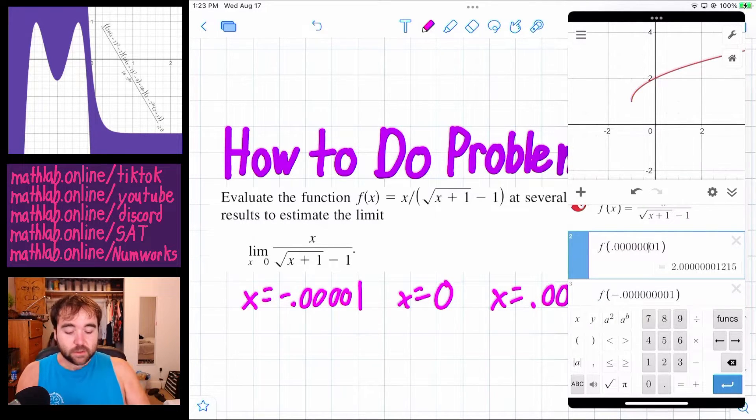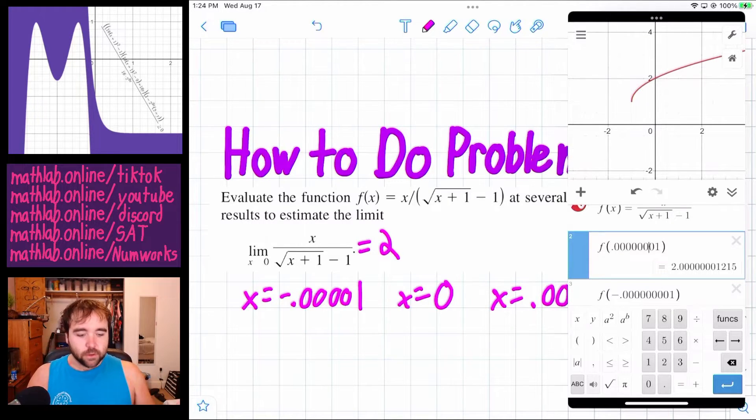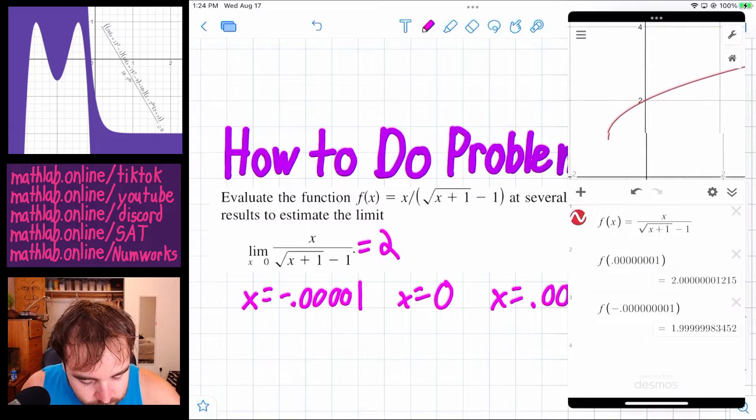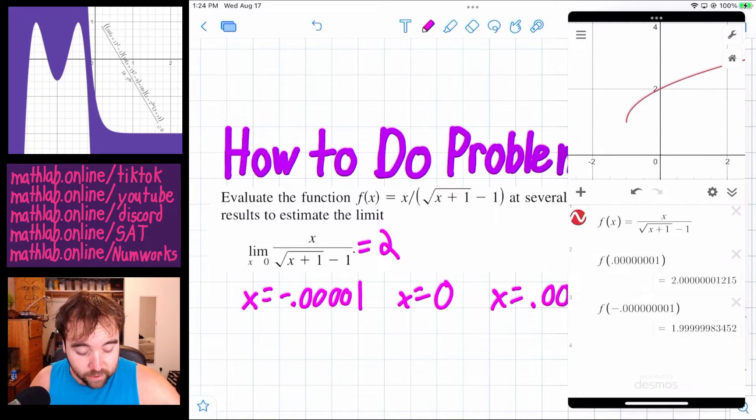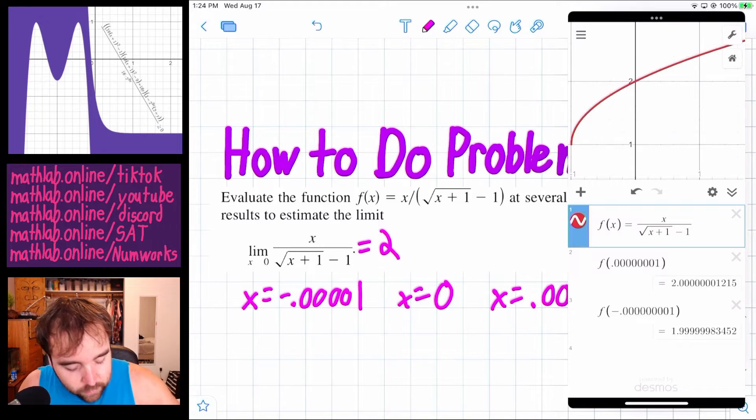And so that means that this limit as x approaches 0 is equal to 2. You can see that from the graph. You can see very easily from the graph that when x equals 0, it looks like y is getting closer to 2. But what's really cool,